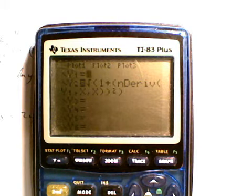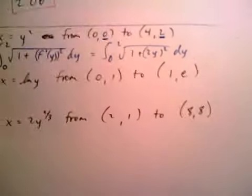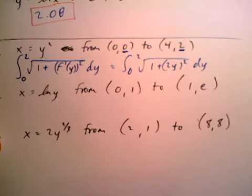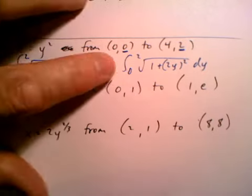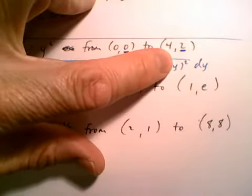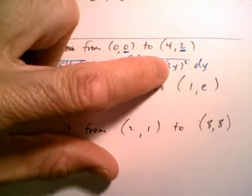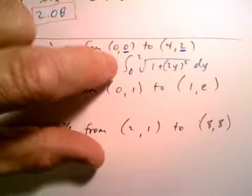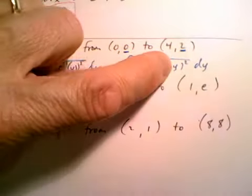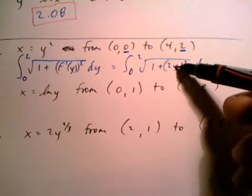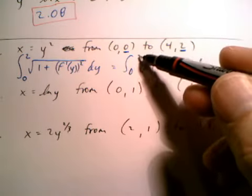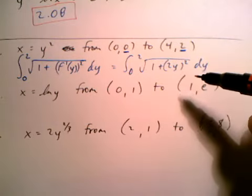Now, what I want to caution you about doing: I want to caution you about changing your limits of integration when you're changing your y1 to x. This is your integral from 0 to 2 of 1 plus 2y quantity squared. Your calculator can't plug in a y, so we're just going to plug in the same exact integral, but we're going to replace the y with an x. But when students replace that with an x, they think they have to change the limits of integration, but you don't.